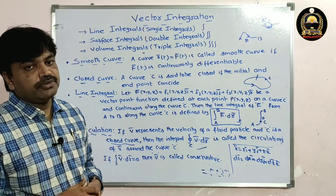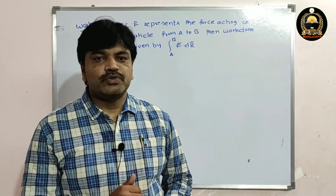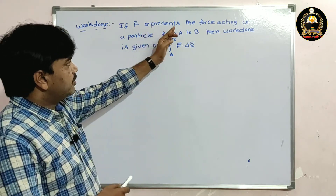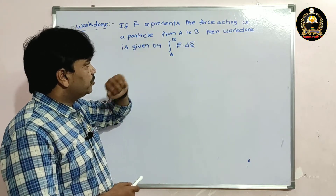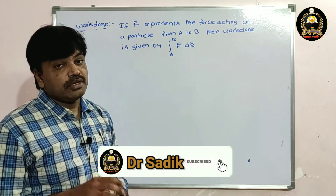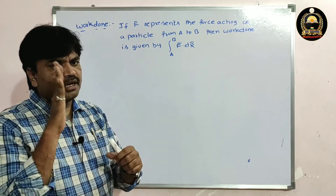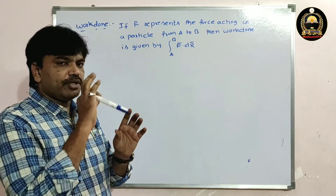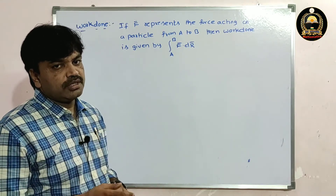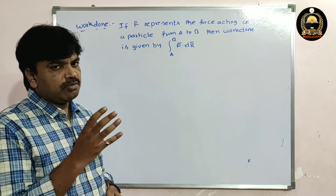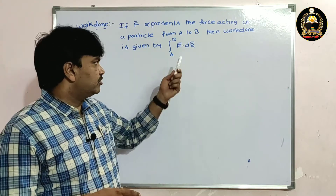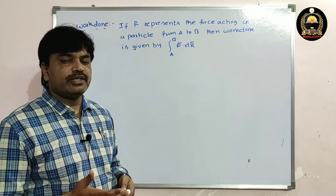Let us see the definition of work done. If f̄ represents the force acting on a particle moving from A to B, then the work done is given by the integral from A to B of f̄·dr̄. Notice the common point: work done, line integration, and circulation all involve the integral of f̄·dr̄.